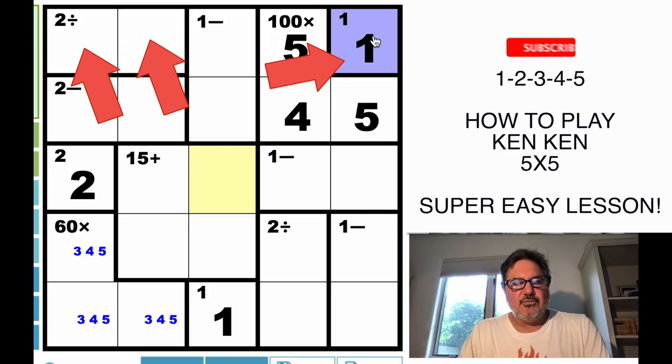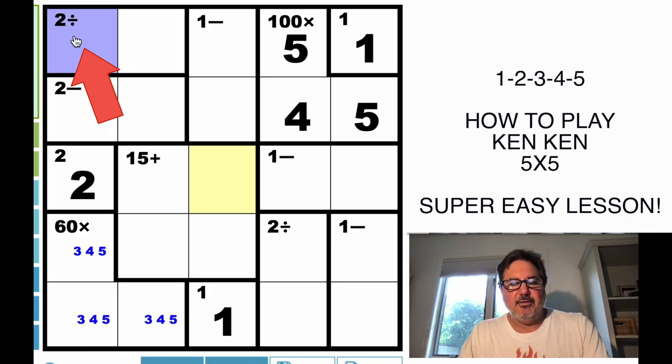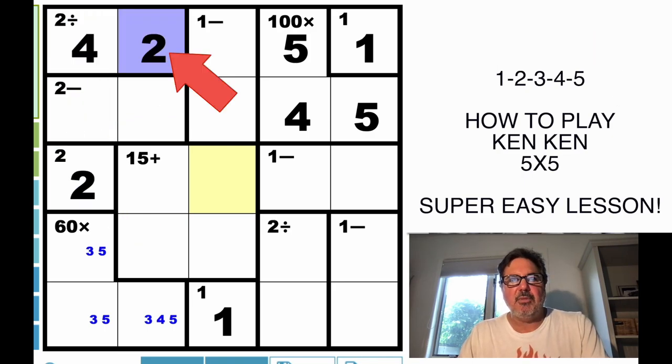But there's a 1 here already. So therefore, this must be a 4 and a 2. And since there's already a 2 here, this one must be the 4, and this one must be the 2.